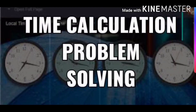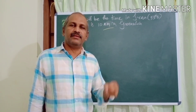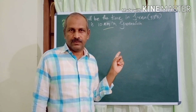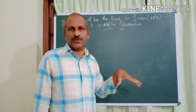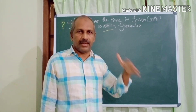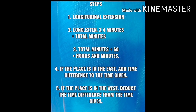Time calculation problem solving — that is, how the time of a place is calculated based on the longitude there. For calculating time, we can follow certain steps. First, we have to find out the longitudinal extension, that means the angular distance between two places. After that, we multiply longitudinal extension by 4 minutes to get total minutes. Then divide total minutes by 60 to get total hours and minutes. If the place is in the east, add the time difference to the time given; if in the west, subtract the time difference from the time given.